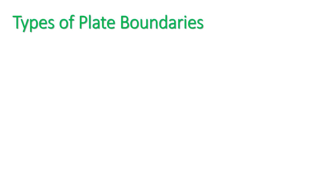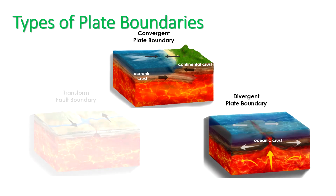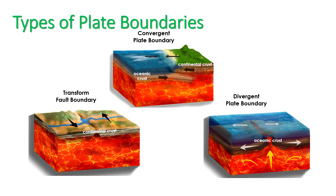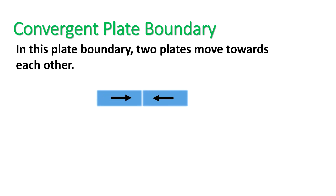There are three types of plate boundaries: convergent plate boundary, divergent plate boundary, and transform fault boundary. What processes happen at these plate boundaries? What are the events and geologic features that occur in these boundaries? The first type is called convergent plate boundary. In this plate boundary, two plates move towards each other, and as the two plates collide, consequences may happen.